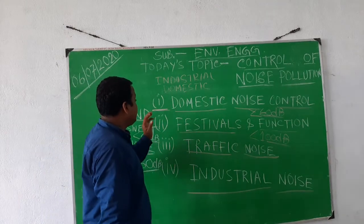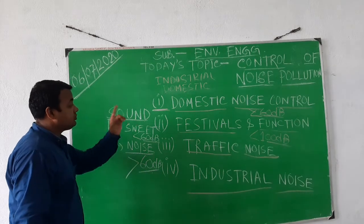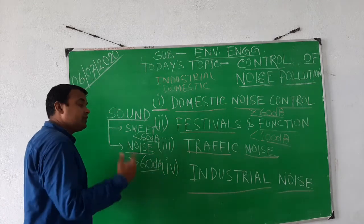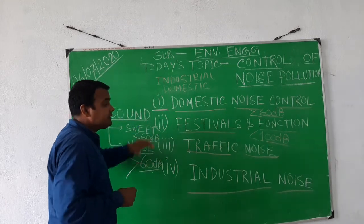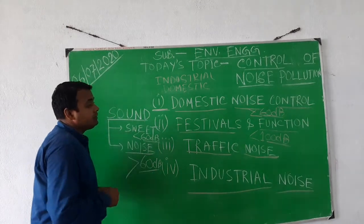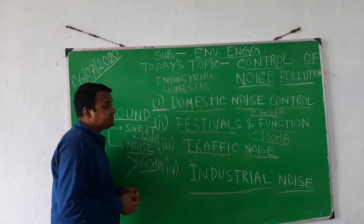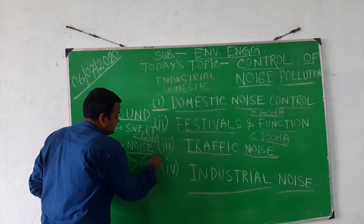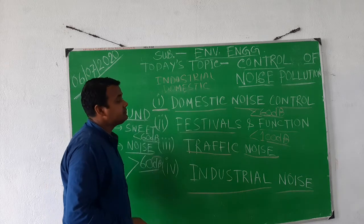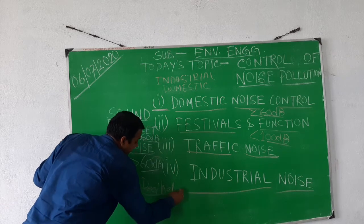To summarize, the four points for controlling noise pollution are: domestic noise control, festival function volume control, traffic noise control, and industrial noise zoning. We also discussed the partition of sound into sweet sound and noise, and the unit of sound is the decibel (dB).